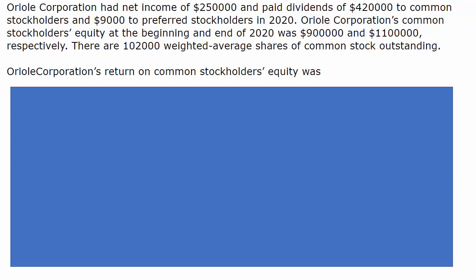Let's explore this multiple choice question that asks us to determine the return on common stockholders' equity. We've got the Oriole Corporation, and they had net income of $250,000. They paid dividends of $420,000 to common stockholders, and they paid $9,000 dividends to preferred stockholders in 2020.